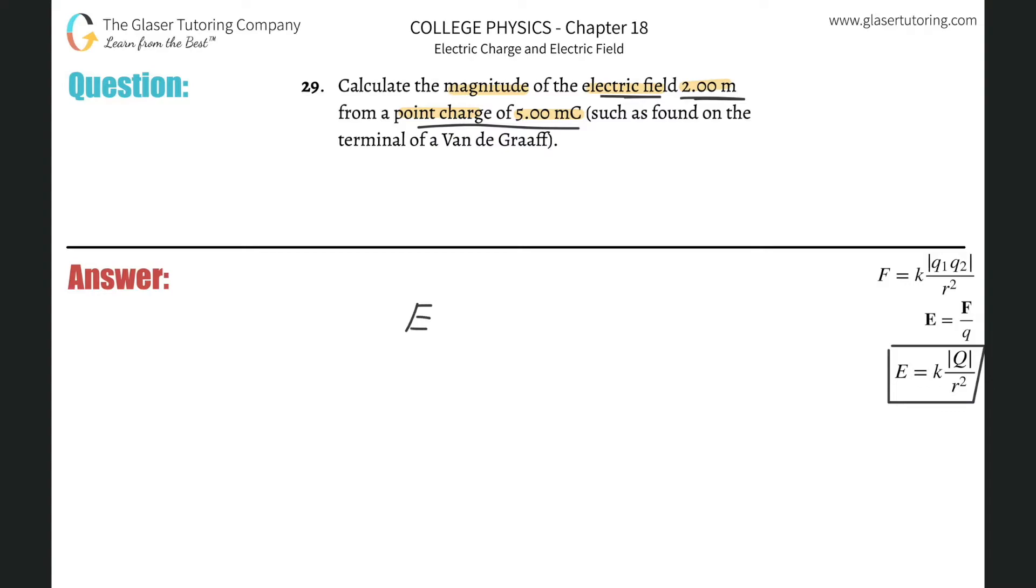It says that the electric field is equal to the electrostatic constant K multiplied by the absolute value of the charge divided by the distance between the charge and the electric field strength squared.